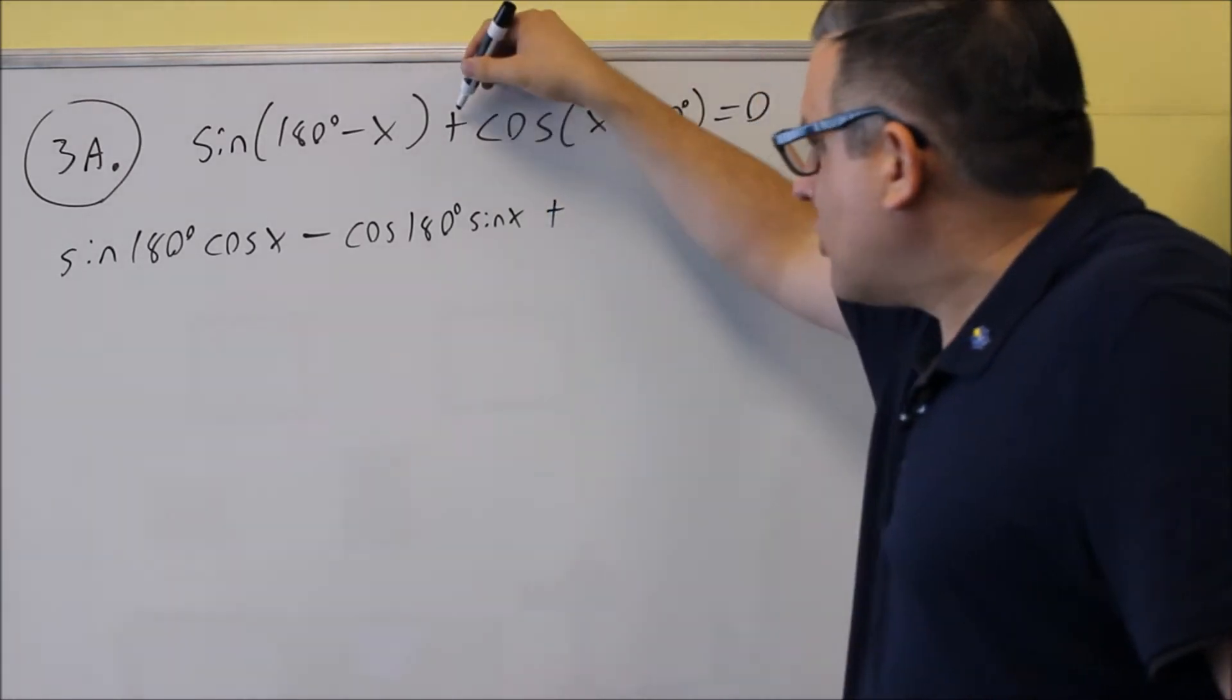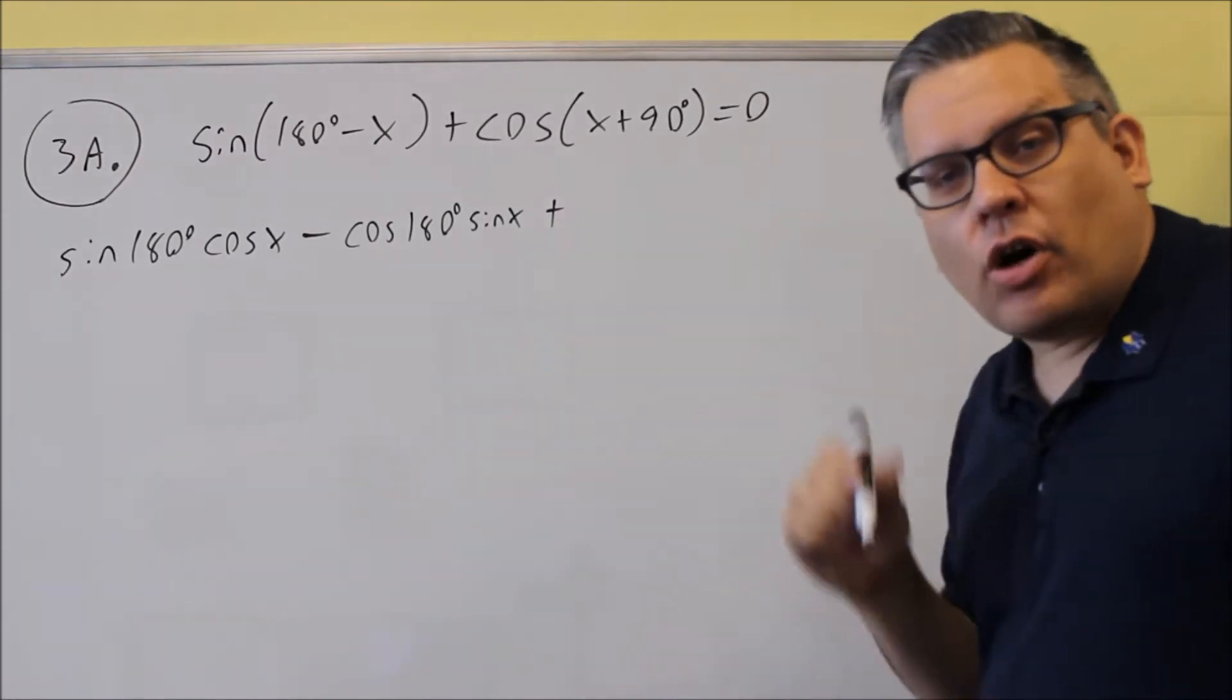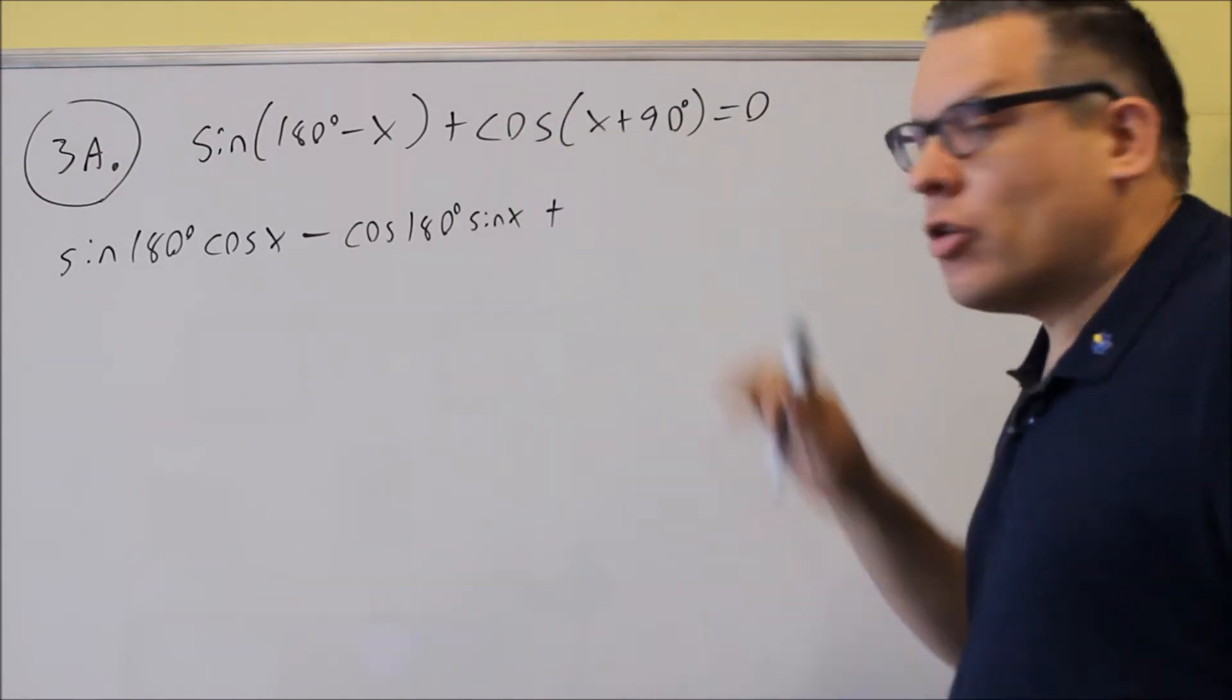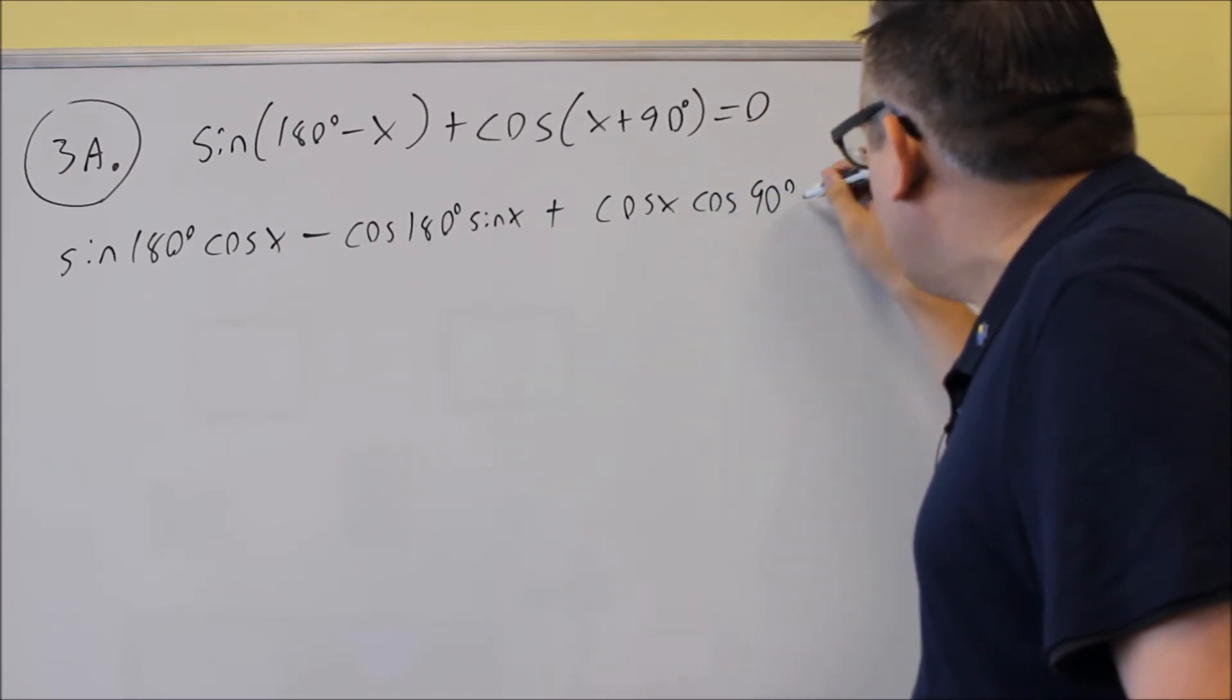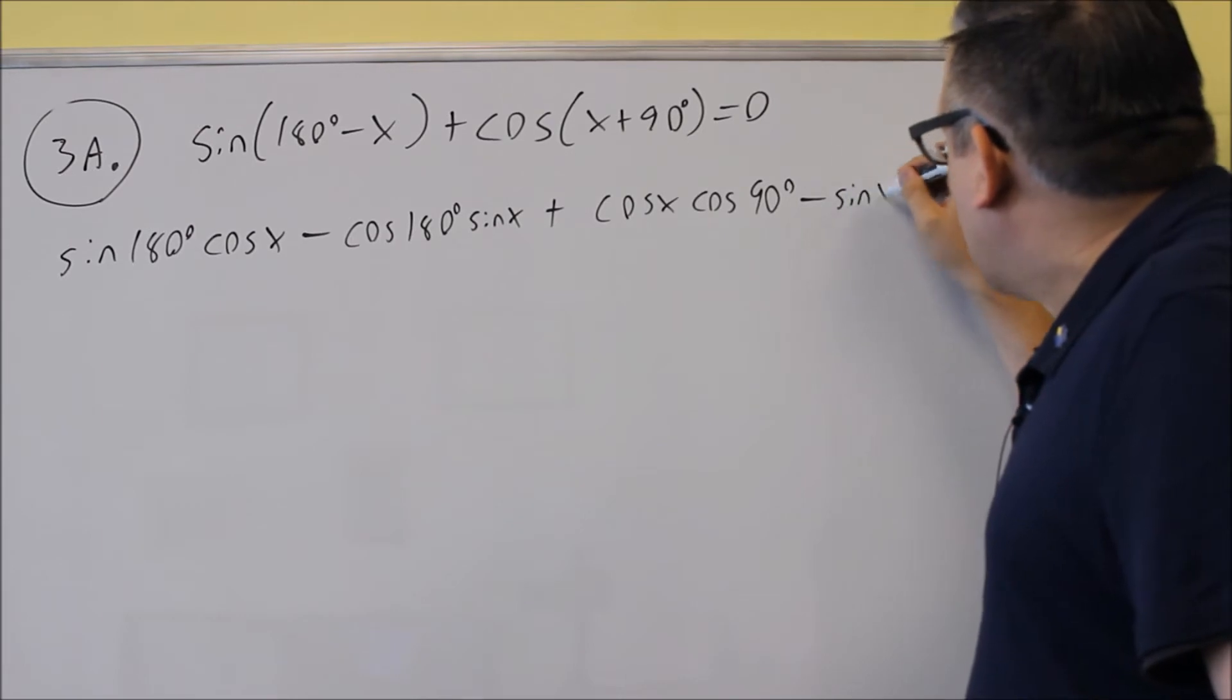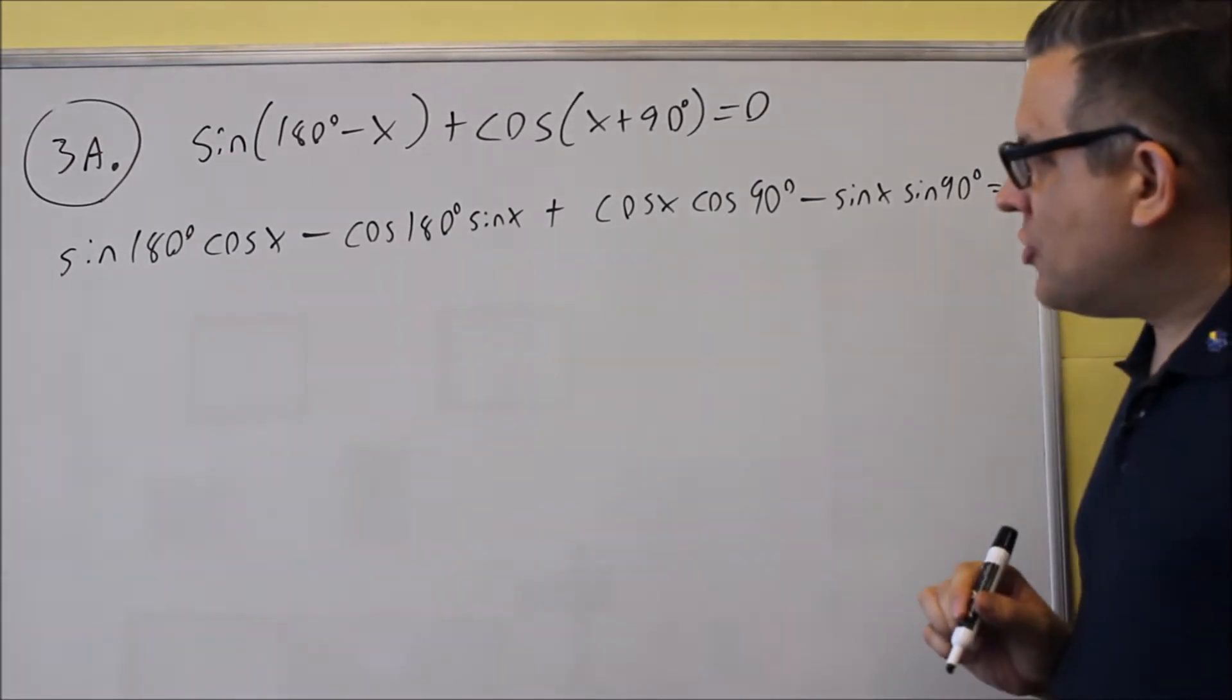I'll put a plus sign because that's this one here. I need to apply the sum formula for cosine. So that one is cosine cosine minus sine sine. We'll put that in for that one. So we're going to do cosine x cosine 90 degrees minus sine x sine 90 degrees and all that's supposed to equal zero.